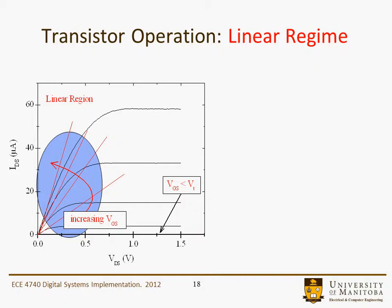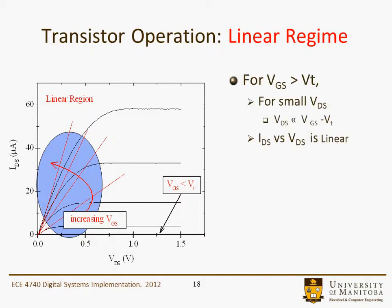To continue on in the linear region, basically we're looking at the IDS versus VDS characteristic now — this is the graph we're probably more interested in. In this particular case, VGS is greater than VT, and we have relatively small VDS, meaning VDS is less than VGS minus VT. In this case, IDS versus VDS is linear, as shown by these red lines here.